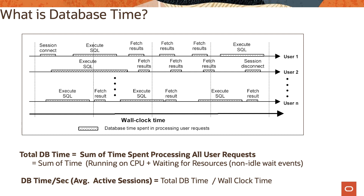DB time per second — that is, average active sessions — is nothing but total database time over wall clock time. Average active sessions is important because it shows the business of your database system, and we are going to use that concept when we talk about capacity planning. So these concepts are important to understand.